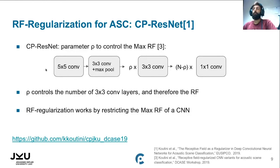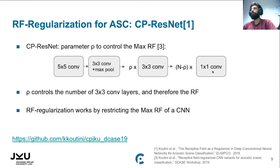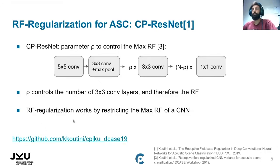Building on this is how CP-ResNet is constructed. We have a parameter rho that controls how many 3×3 convolutions are in the network. The basic structure starts with a 5×5 convolution, then a 3×3 convolution and pooling, followed by rho 3×3 convolutions, with the remaining layers being 1×1 — which don't increase the Receptive Field. You can see the details of the implementation in previous work or on GitHub in our submission to last year's DCASE.